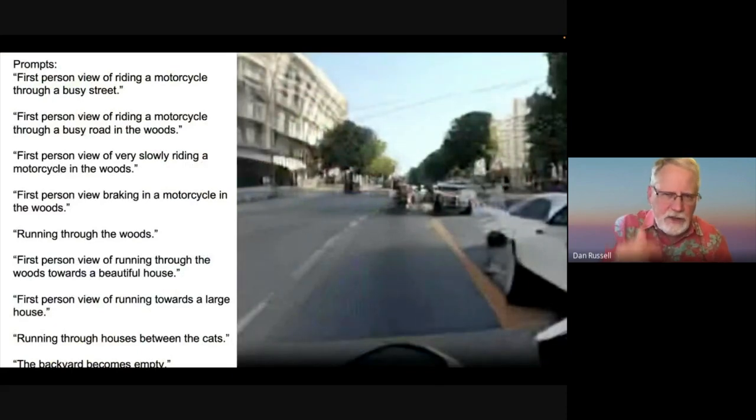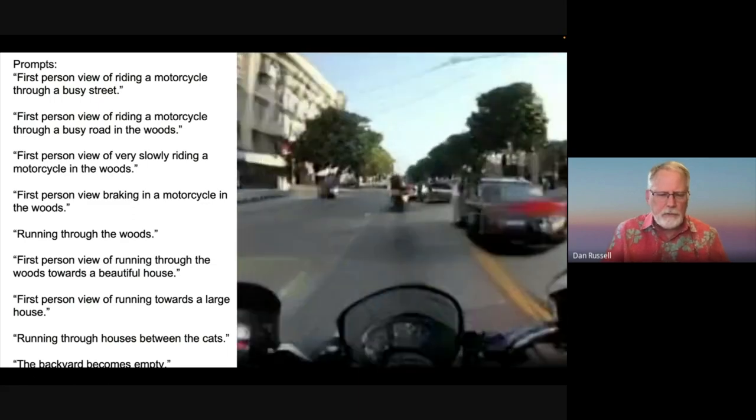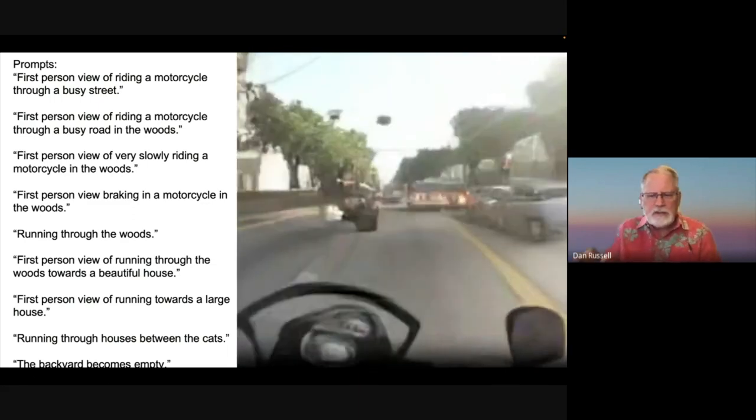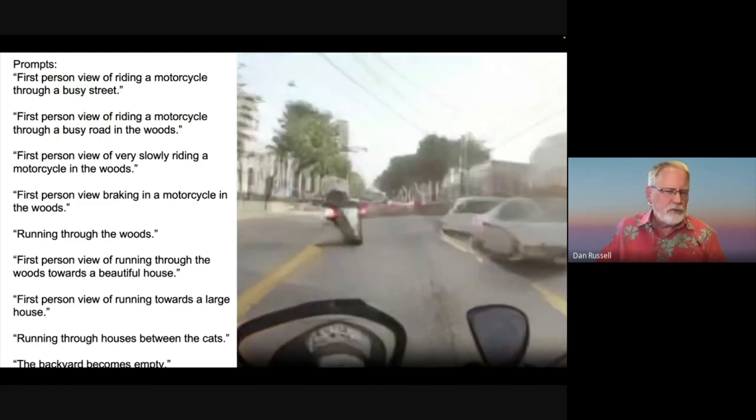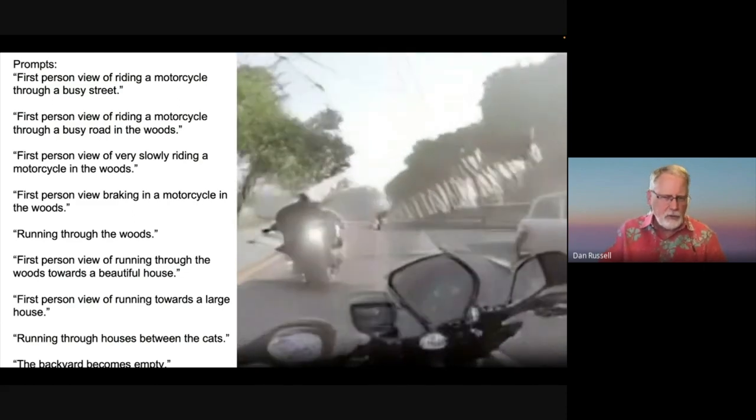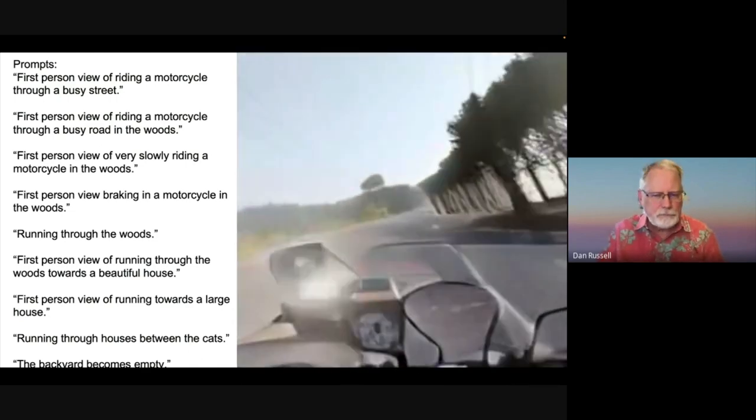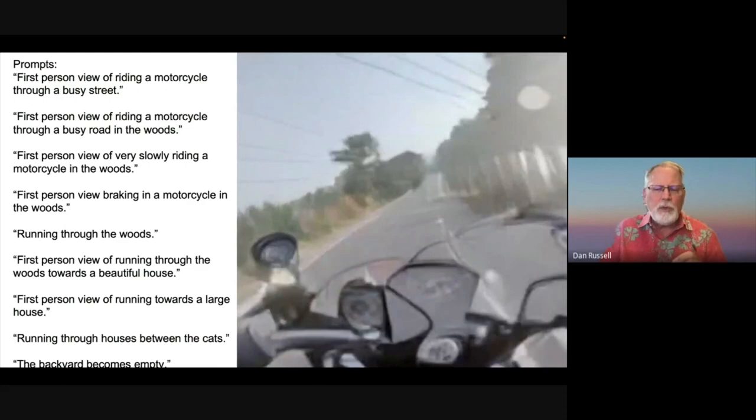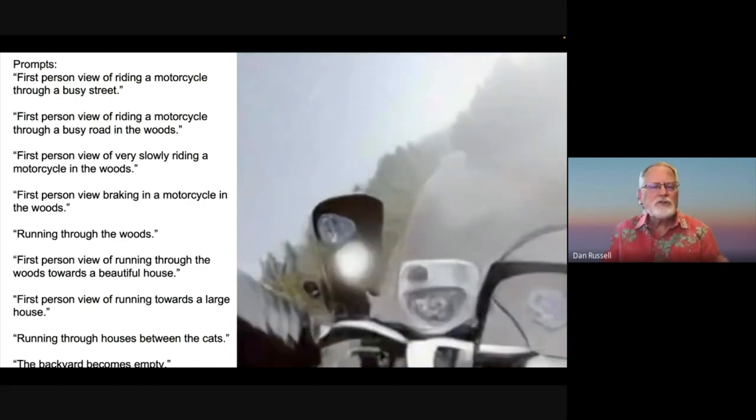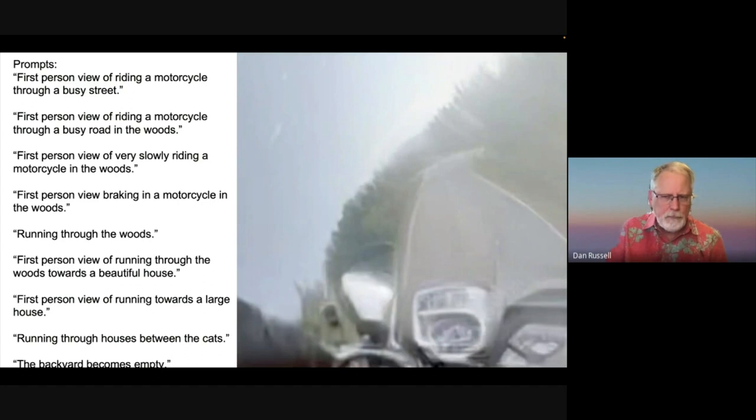What happens is videos that are prompted by effectively what are scripts. So what you see here on the left is a script that was written as a prompt for a video generation system. The first one, first person view of riding motorcycle through a busy street, then busy road in the woods. I'm going to start the video here and you will see that the image quality is not great, but the image quality of the first versions of the image synthesis systems were about this good as well. You can see where this is going. So soon we will be able to have videos that are following scripts that are generated by people. This is a new tool for creating videos, films, and so on.